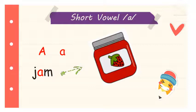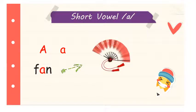Here we have JAM. Let's spell the word together. Do you know that I love eating JAM? Now let's spell the word together: J, A, M — JAM. Can you hear the short A sound in the word JAM? J, A, M — JAM. What can you see here? Let's spell the word before reading it. Can you hear the short A sound in the word FAN? FAN. Great.